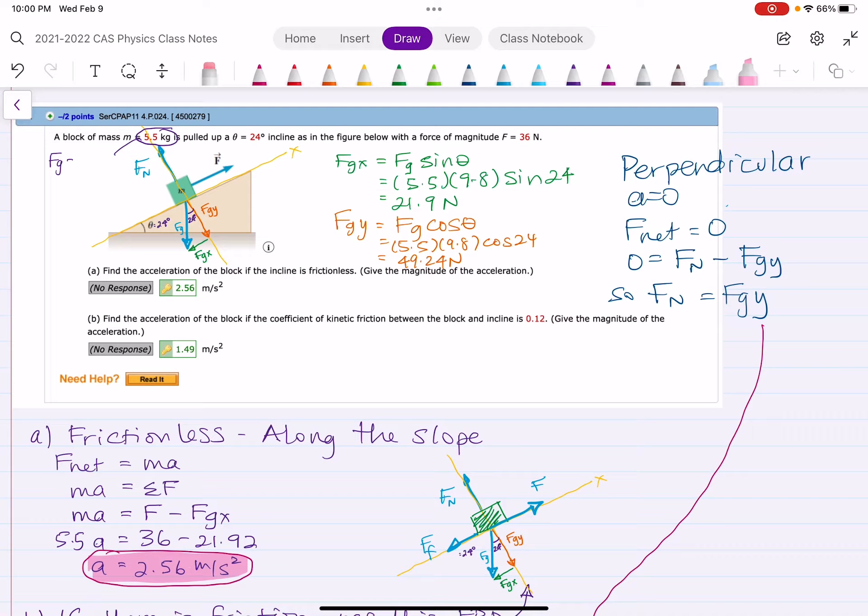Question four is another slope question. In this case, there's two conditions. In part A, we're dealing with a frictionless surface.